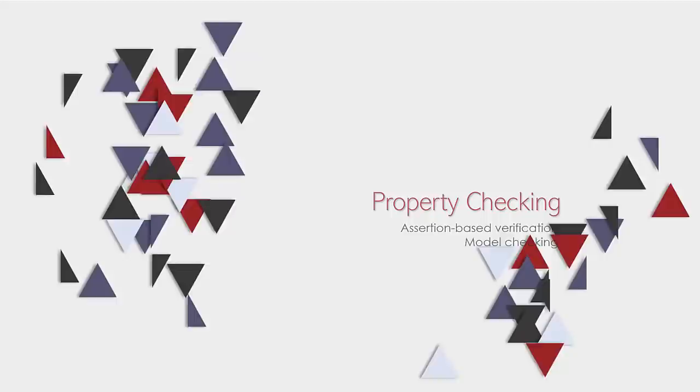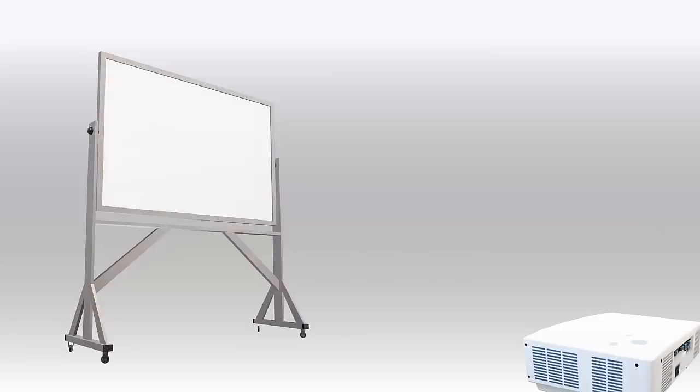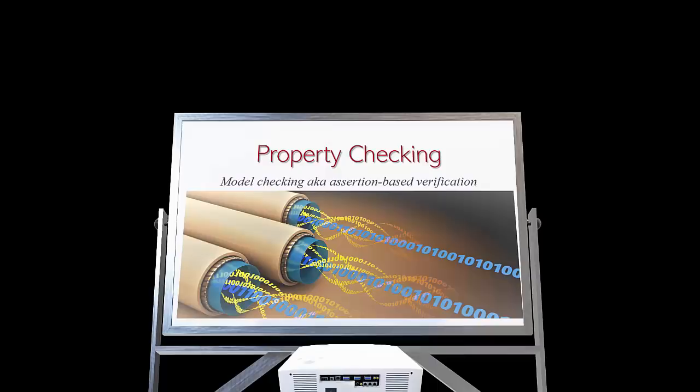Let's talk about property checking, more popularly known as assertion-based verification, which has its roots in model checking. So what is property checking? As opposed to checking with explicit traces of zeros and ones, which is what happens intuitively in dynamic simulation, property checking takes the view of verifying the designs exhaustively by using mathematical techniques.